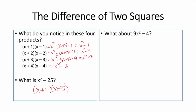What about 9x squared minus 4? We have to take the square of this first term. It looks like it should be 3x plus the square root of 4, which is 2,